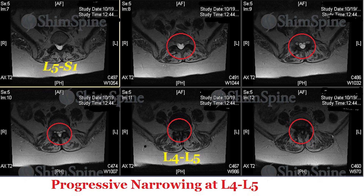The axial view, or cross-sectional view, will also provide another angle of visualization of the spinal stenosis. When compared to a more normal level, you can see the triangular shape of the canal and the narrowing of the space that is occupied by the nerves that extend from the spinal cord into the lower body.